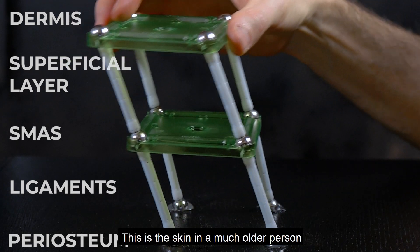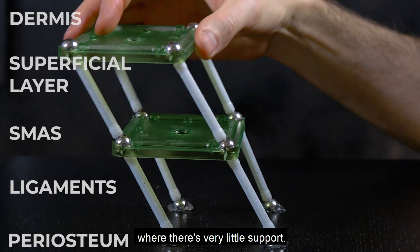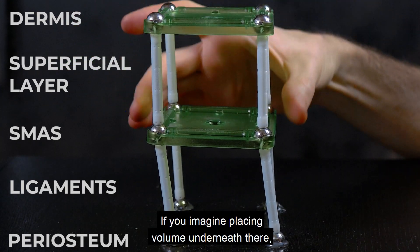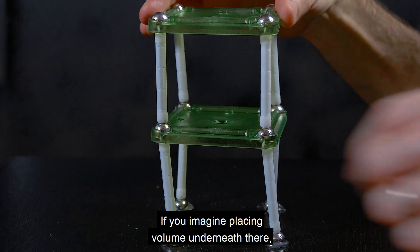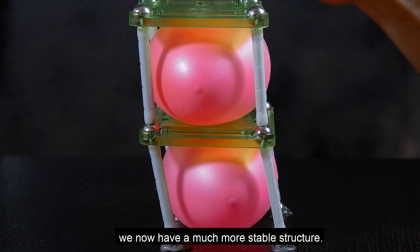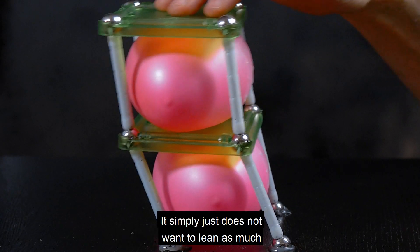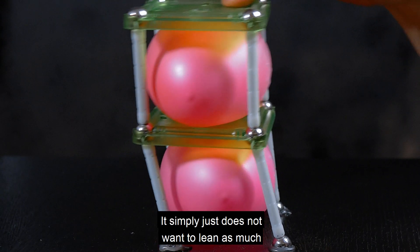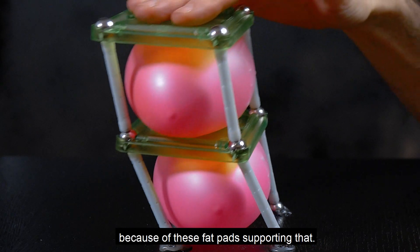This is the skin in a much older person where there's very little support. If you imagine placing volume underneath there, which I'll represent with these balloons, we now have a much more stable structure. It simply just does not want to lean as much because of these fat pads supporting that.